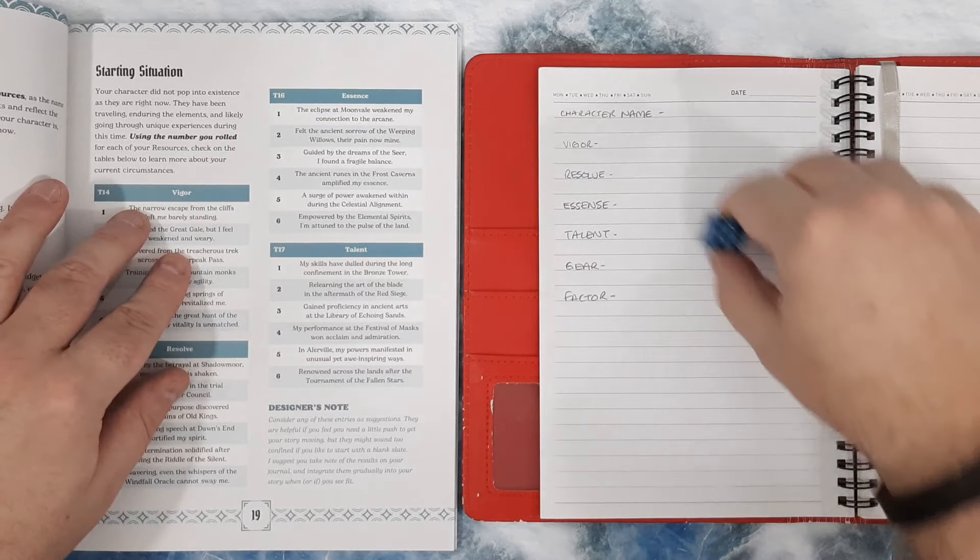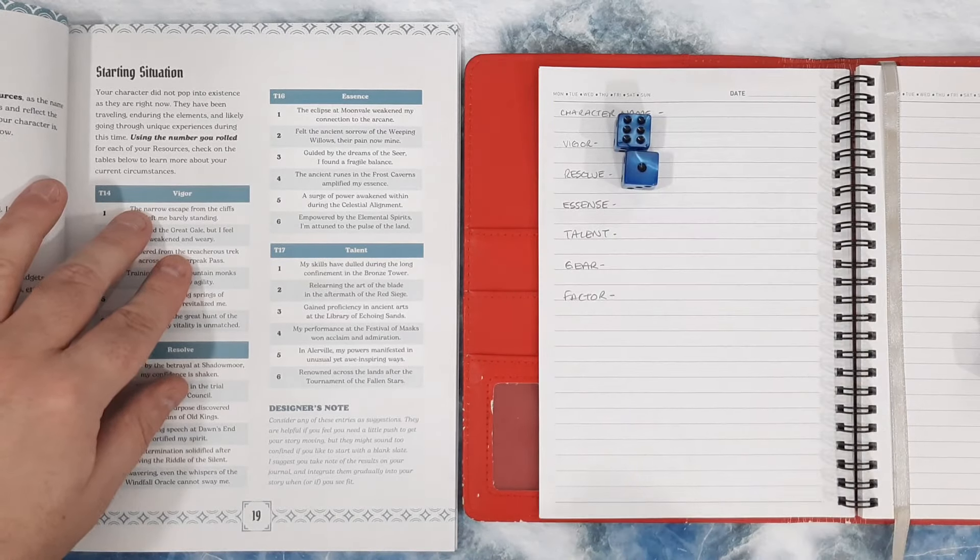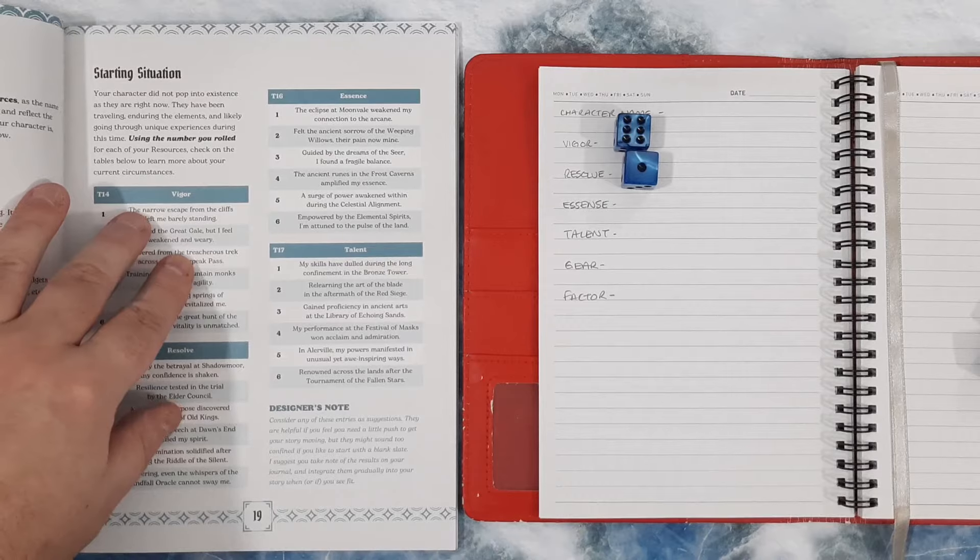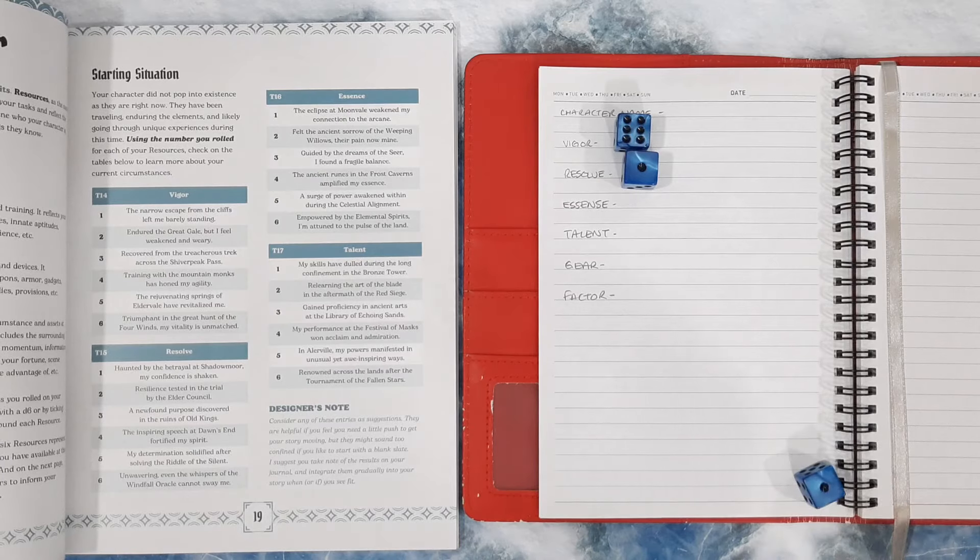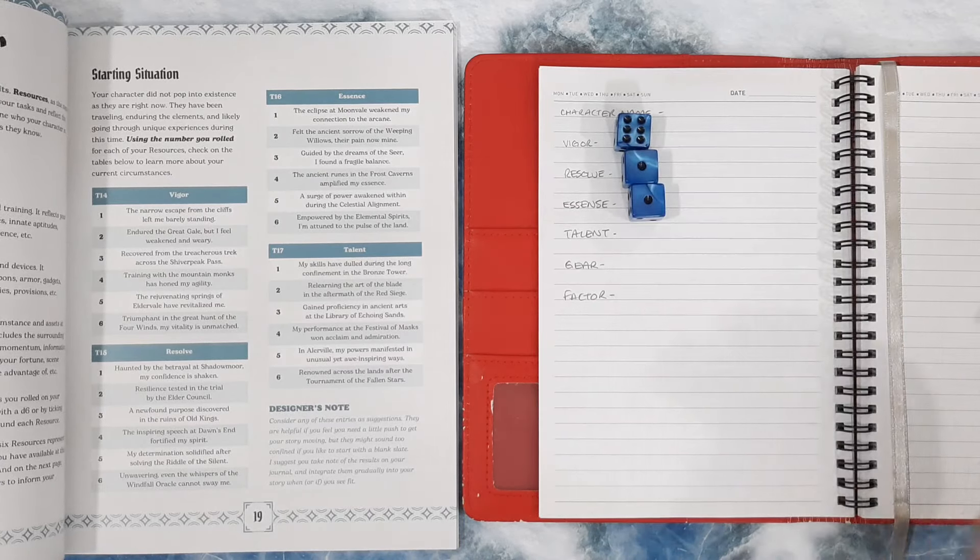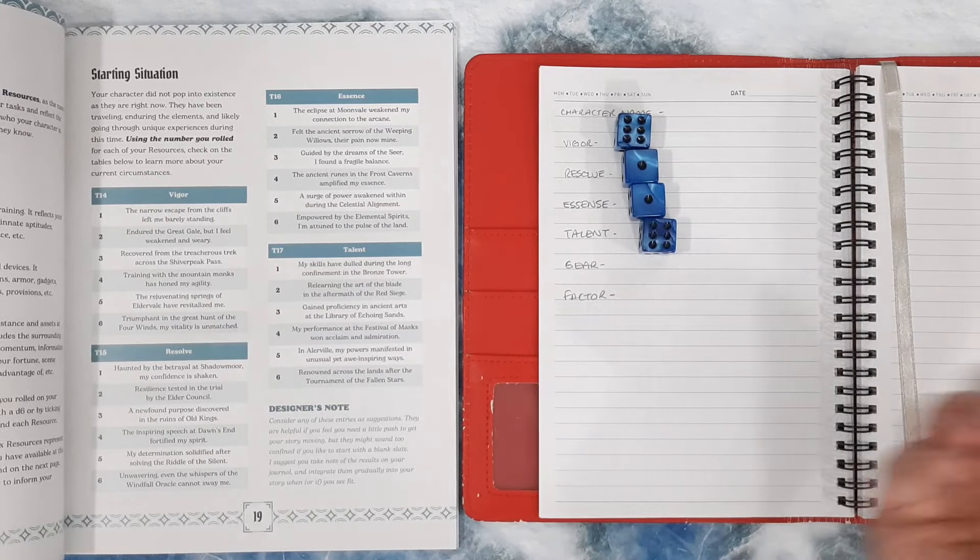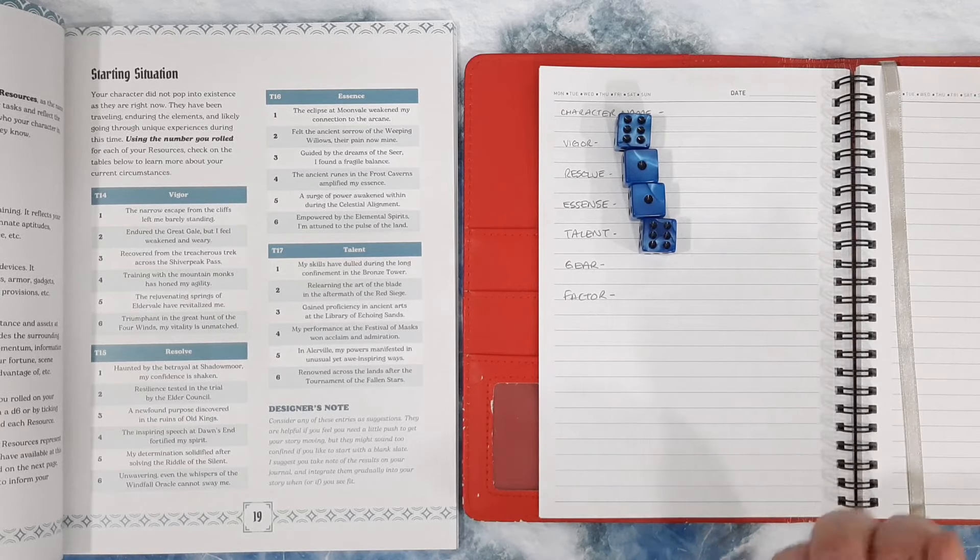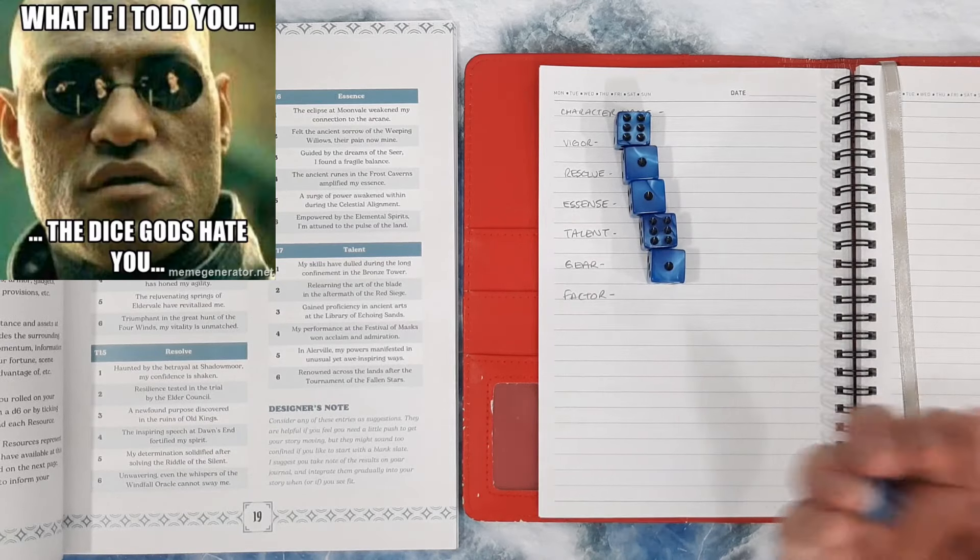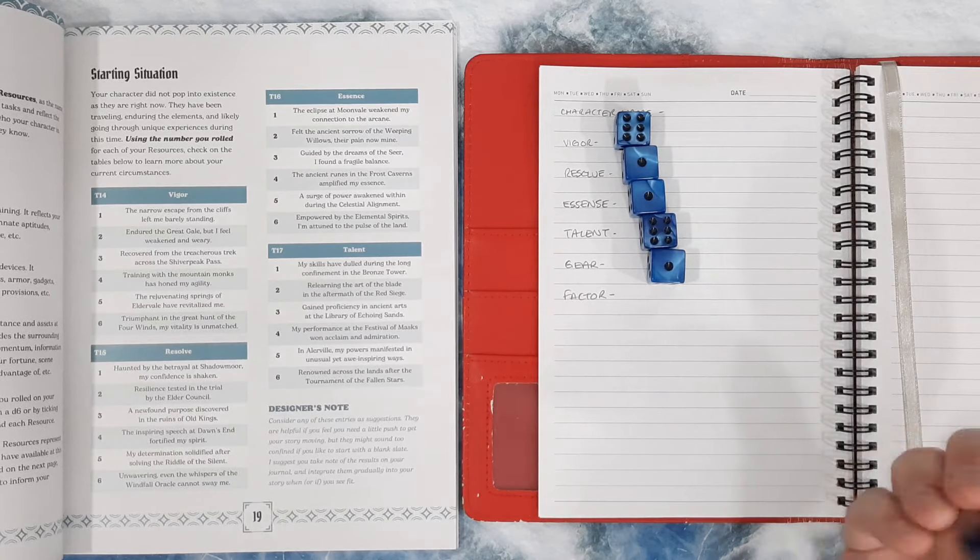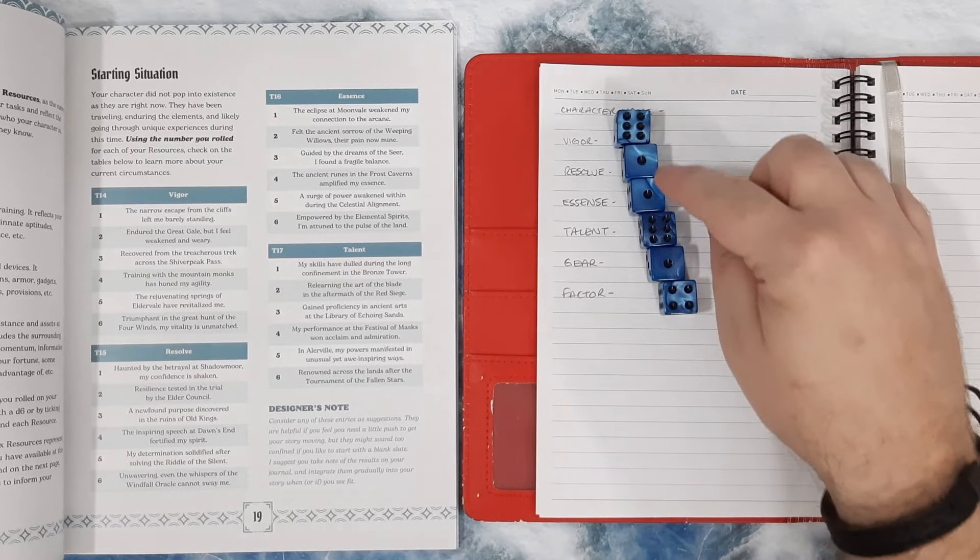I'm strong, but maybe a bit stupid. Right, essence. Essence is magic and spirituality. Oh no no no. Talent, my abilities and training. Oh my word, I've got min-maxing. I'm min-maxing here. Gear, equipment and devices. Oh my, what the hell? And my factor, which kind of is everything else. This could be quite a useful one. A 4. Oh dear, look at this. 6, 1, 1, 6, 1, 4.